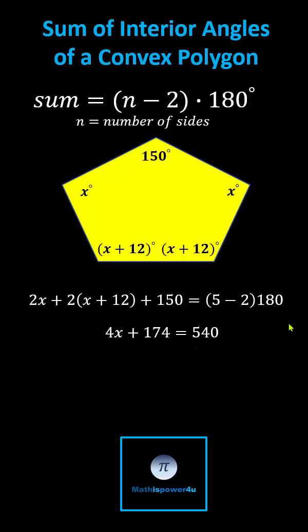Next, we subtract 174 on both sides, which gives us x equals 366. Now, we divide both sides by four. x equals 91.5.